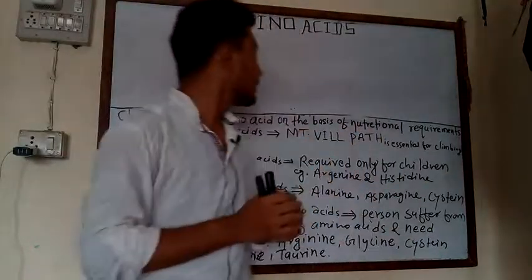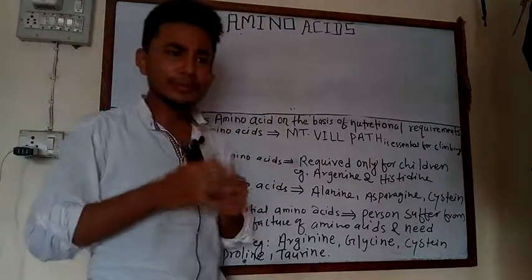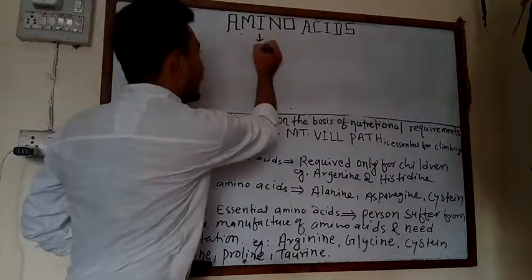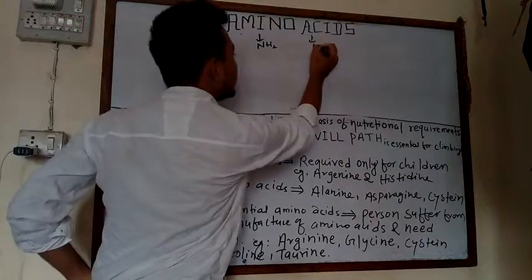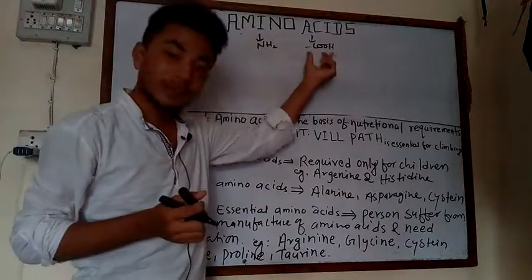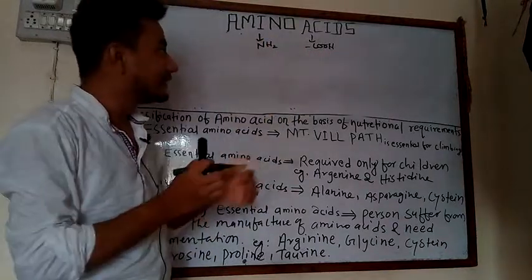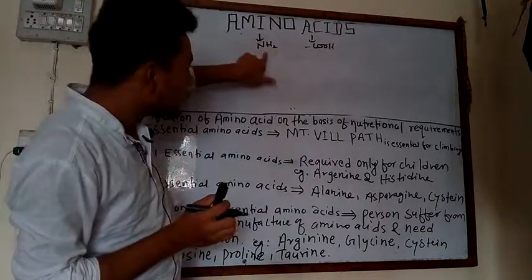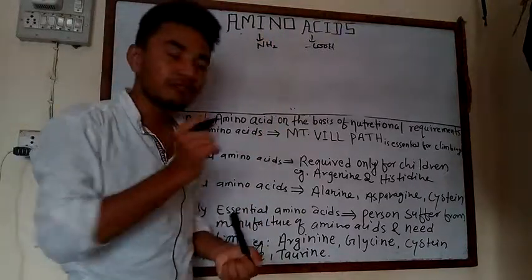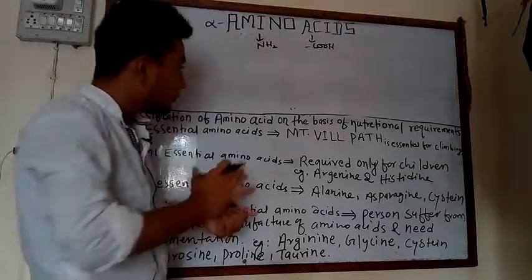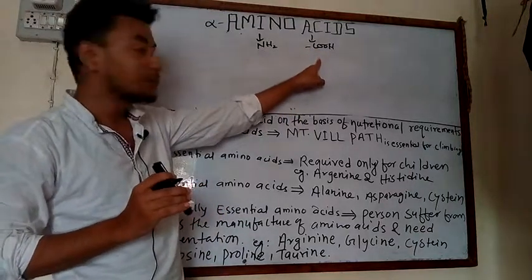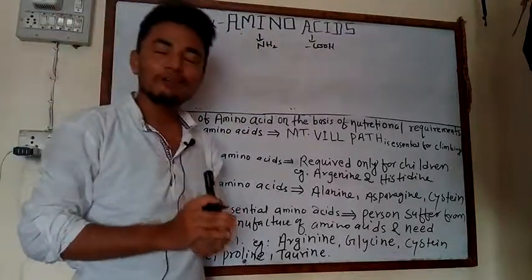First, let's talk about what an amino acid is. Its name itself tells us: 'amino' means an NH2 group and 'acid' means a COOH group. So the organic compound which is made up of an amino group and a carboxylic acid group is called an amino acid. This NH2 group is always present at the alpha position, so amino acids are also called alpha amino acids.